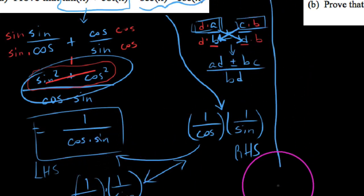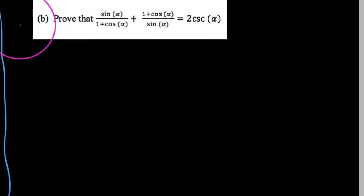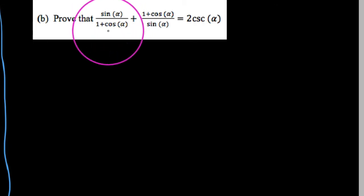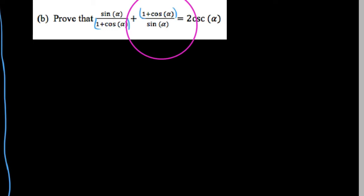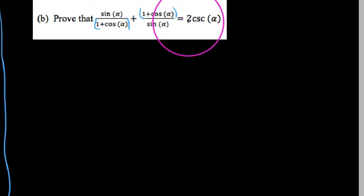The last example we'll take a look at has quite a bit of algebra. We have to prove that sine over the quantity 1 plus cosine, plus the quantity 1 plus cosine over sine, equals 2 cosecant of alpha.